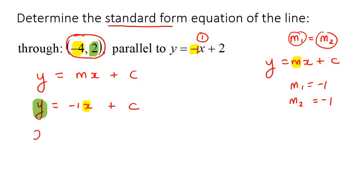So then that would end up becoming 2 equals negative 1 times negative 4 plus c. So we can say 2 is equal to 4 plus c. And if you had to get c by itself, it would be negative 2.